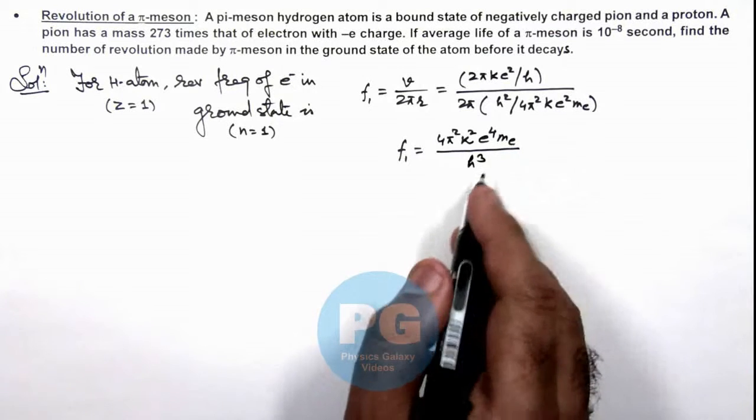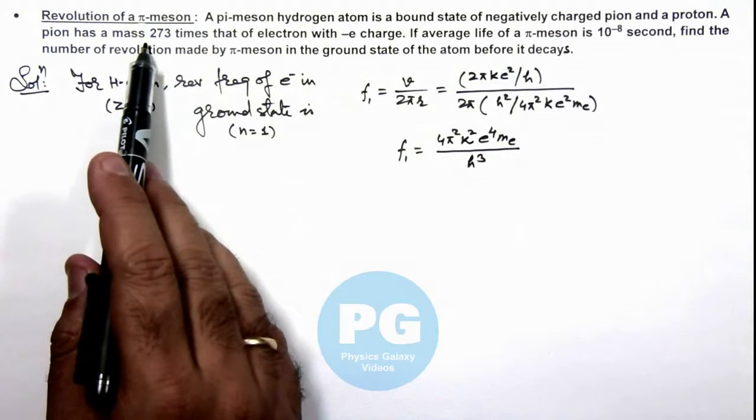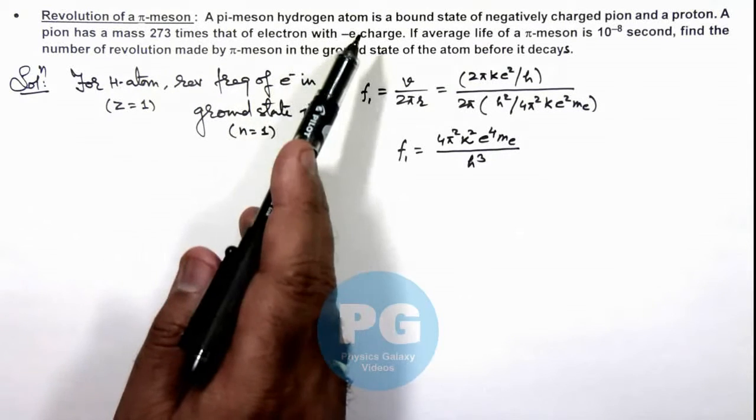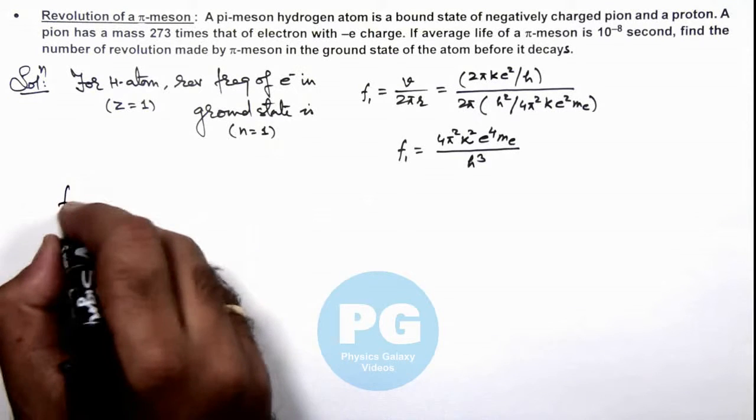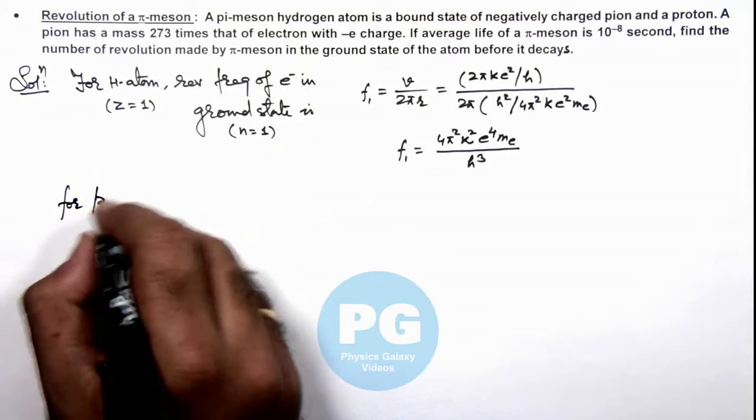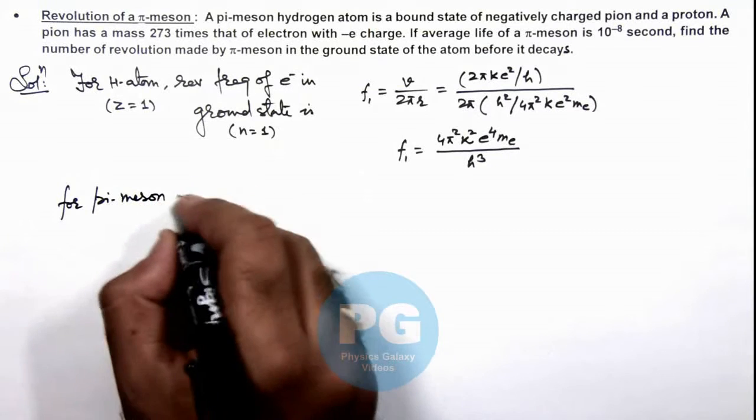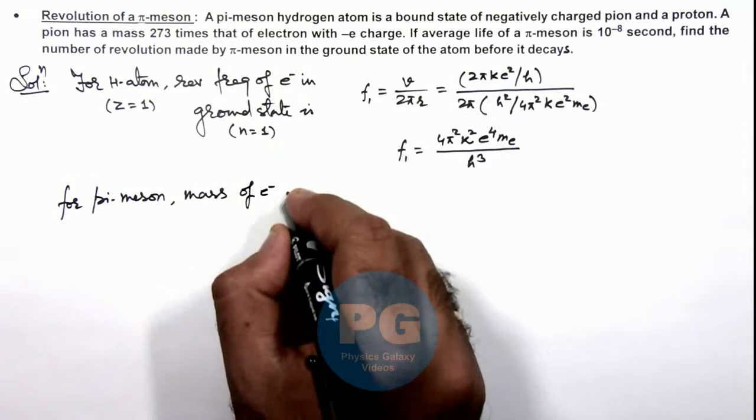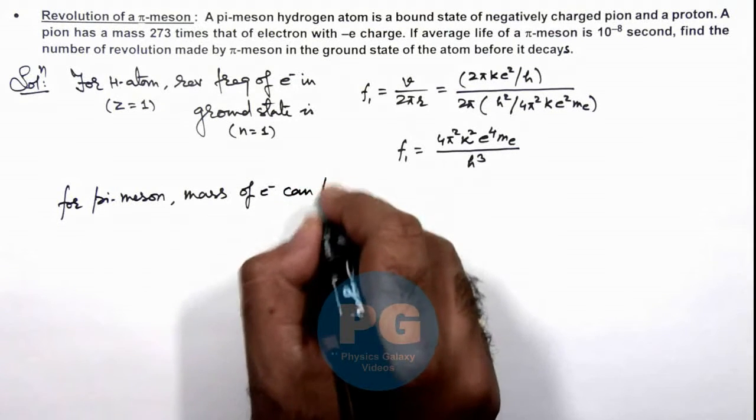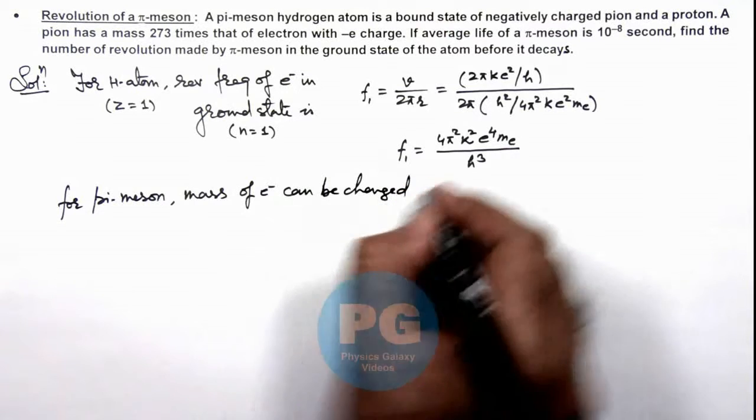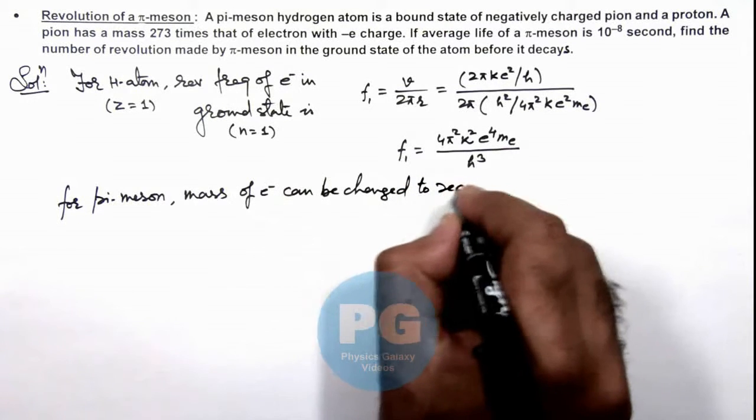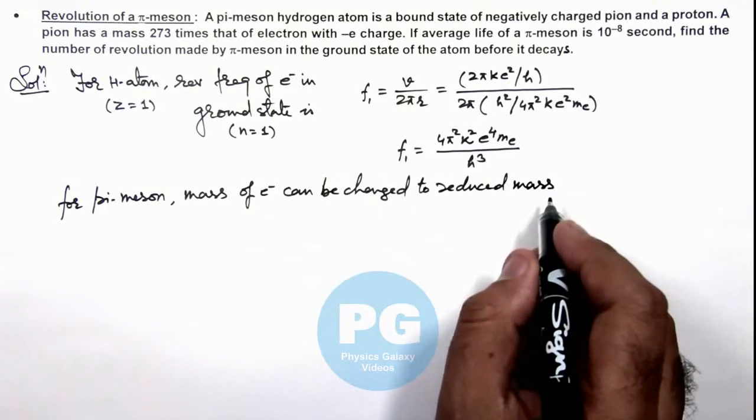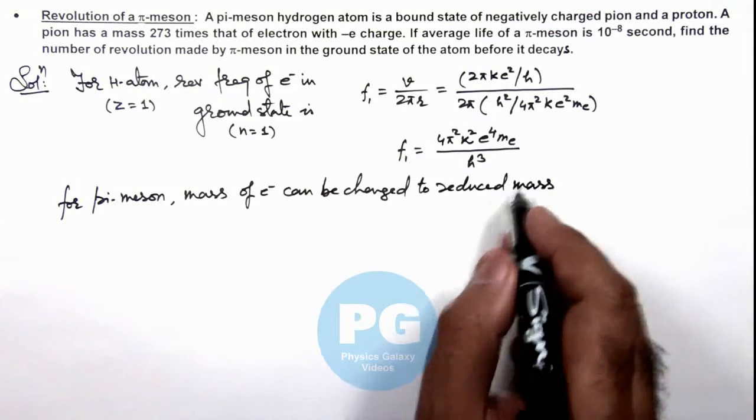But when we talk about a π-meson which is having a mass 273 times that of electron, which is significant compared to the proton, here we can write that for π-meson, mass of electron can be changed to reduced mass.